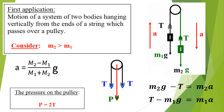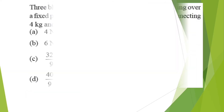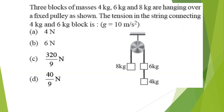The tension T can be found from either equation. The pressure on the pulley is the resultant of the two tension forces, which are equal and act in the same direction, so the pressure on the pulley equals 2T.